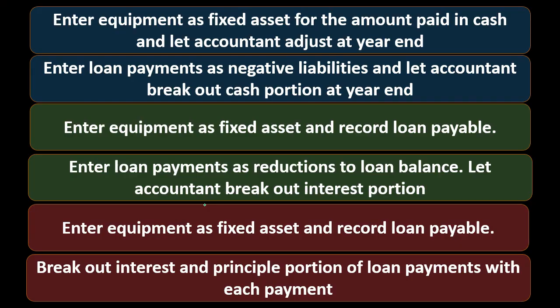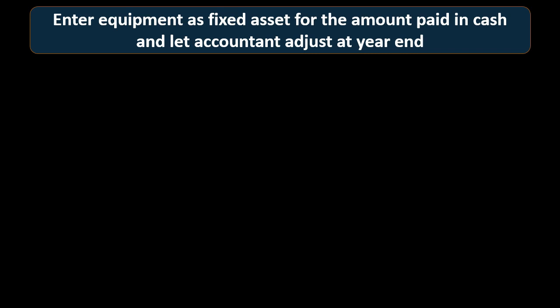We have a couple different options. First, the easy method: we just say, is it equipment? Is that $9,000 equipment? If it is, then we're going to put it in the system and characterize it as equipment — meaning we'll put it in the books as an asset rather than an expense. We're going to create an asset account and put it on for the amount that was paid, the $9,000.